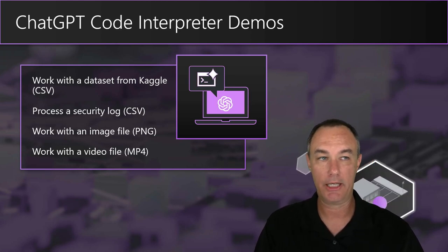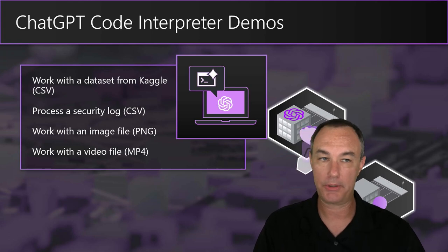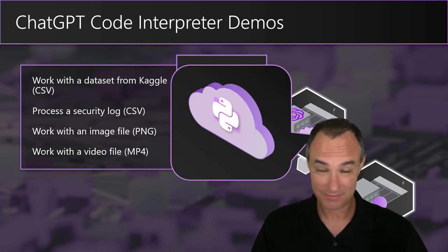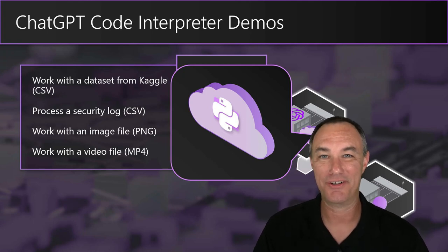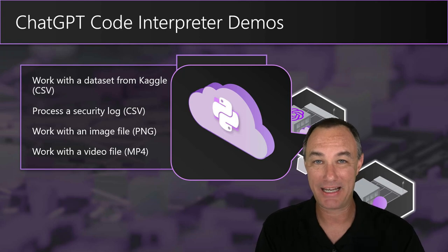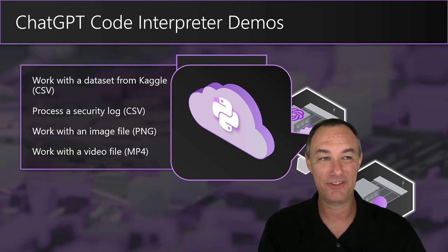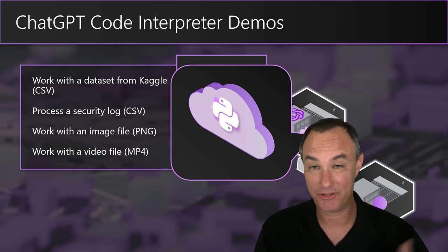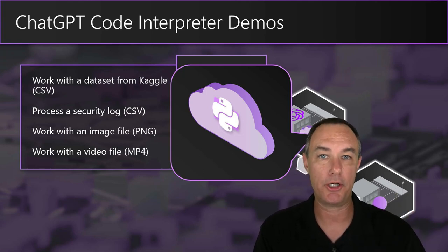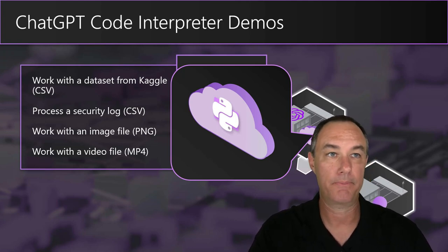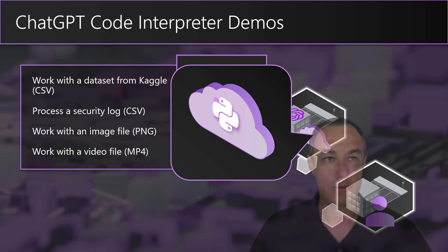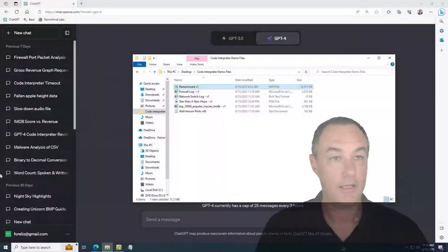Here are some of the demonstrations we're going to do today: we're going to work with a dataset, look at some security logs, work with an image file, and we may work with a video file. There's a size limitation — it will allow you to send up to 100 megabytes. My experience: don't push the envelope because some of the files I'm going to send are going to cause issues. I expect to have to battle some of the uploads. Let's go out to the environment — we've spent enough time sharing and let's get in.